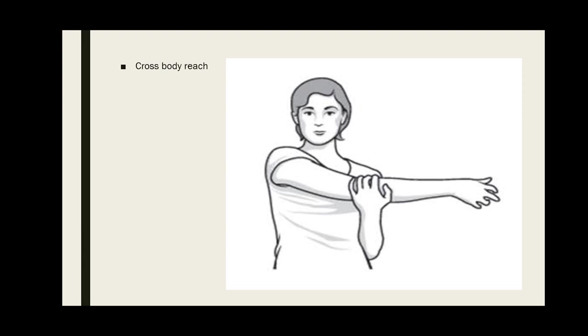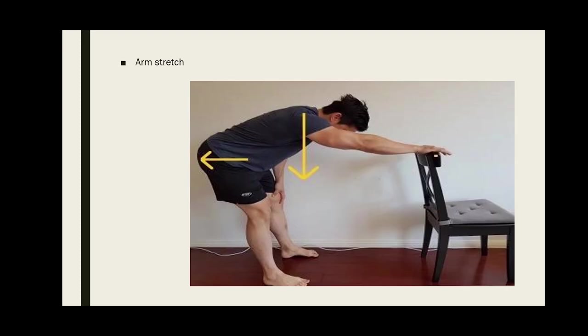Arm stretch: place the affected arm on a shelf about chest height or a wall. Hold on to the shelf or wall and lean your body forward until a stretch is felt in your shoulder joint. Hold for a few seconds at the end range, then relax.